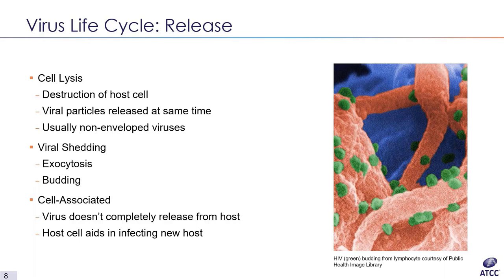There are three basic ways viral particles are released: cell lysis, viral shedding, and remaining cell-associated to the infected host. In cell lysis, the host cell is destroyed and assembled viral particles are released all at once. Viral shedding slowly releases particles over time — this can be done via exocytosis, where particles are packaged in vesicles carried to the cell membrane. A shedding strategy exclusive to enveloped viruses is budding, where the virus borrows the host cell membrane to create its own viral envelope. This process does not immediately destroy the host cell but slowly uses up the membrane until the cell eventually dies.